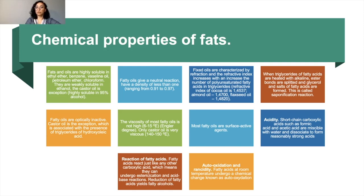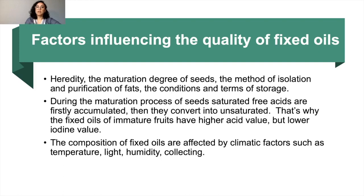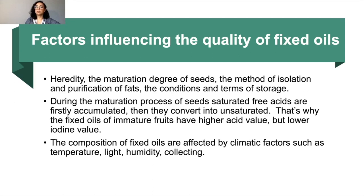There are some factors that influence the quality of fixed oils: heredity, the maturation degree of seeds, the method of isolation and purification of fats, and the conditions and terms of storage. During the maturation process of seeds, saturated fatty acids are first accumulated, then they convert into unsaturated. That is why fixed oils of immature fruits have higher acid value but lower iodine value. The composition of fixed oils is also affected by climatic factors such as temperature, light, humidity, and collecting time.